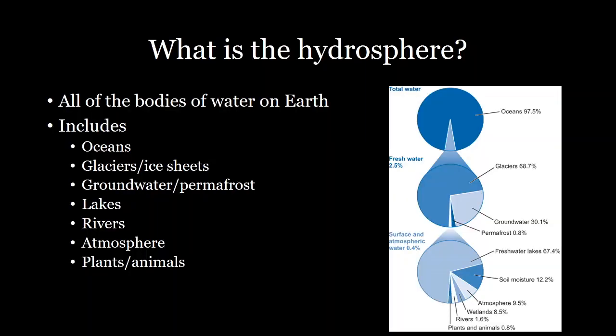So what is the hydrosphere? The hydrosphere is the processes dictating the movement of water around the earth. This includes all of the oceans, ice, groundwater, lakes, rivers, water in the atmosphere, and plants and animals as well.